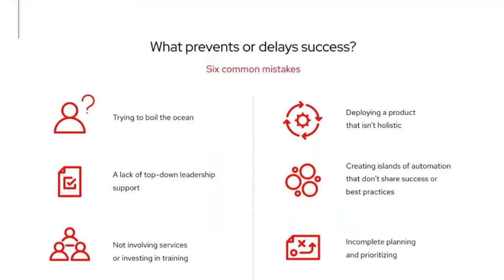So what are some of the challenges when it comes to automation? The biggest one I've seen is people who are approaching automation for the first time try to boil the ocean — they take the most complex use case and try to automate that. Other challenges include a lack of leadership support, not investing in resources and training, or not selecting a tool that is able to address automation holistically. Finally, planning and prioritization — automation is sometimes treated with lower priority because organizations are just struggling to keep the lights on.